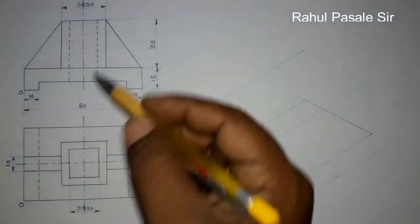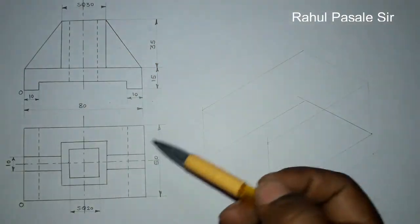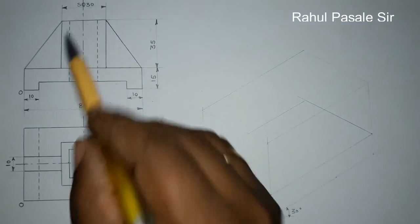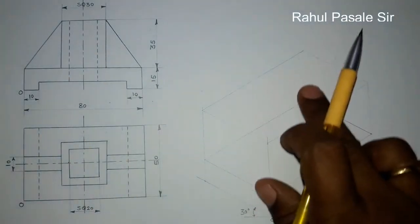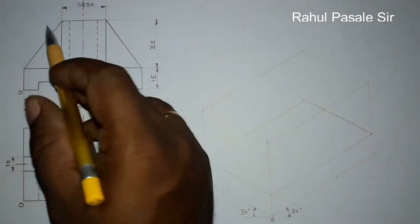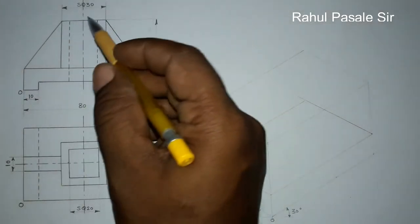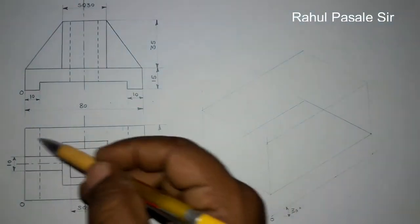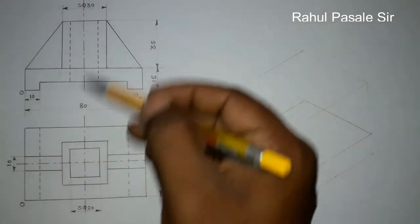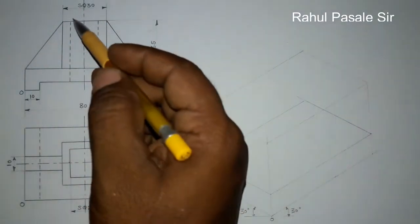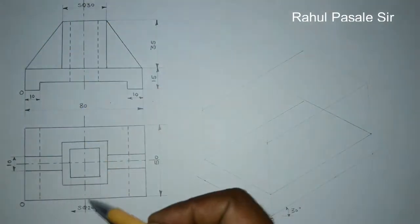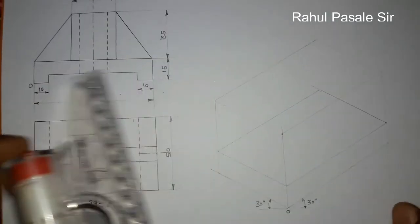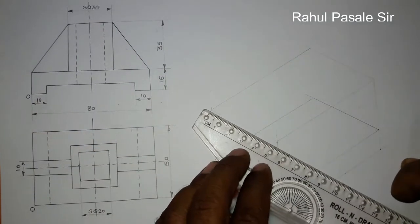Then we are going to draw this prism. This prism starts from the top of this object, so firstly we locate the center for this prism. Observing the top view, the prism is located at the center of the length and center of the width. It is the highest point of this object, having an external square size of 30mm and internal size of 20mm. So firstly, locate the center for both the width and the length.